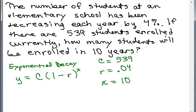Right? So we just put those numbers in here. Y equals 539. Now instead of 1 plus R, notice this is 1 minus R. 1 minus 0.04 to the 10th power.